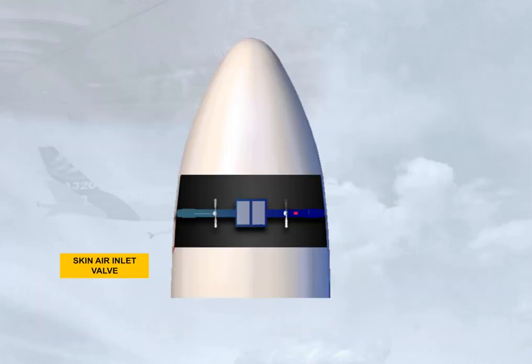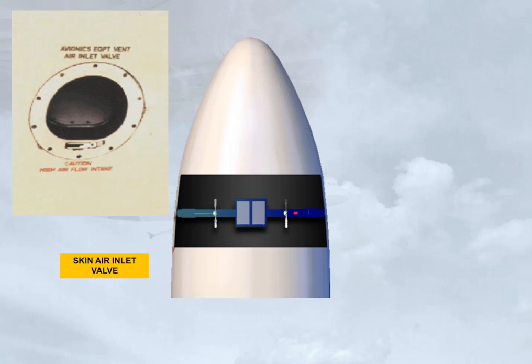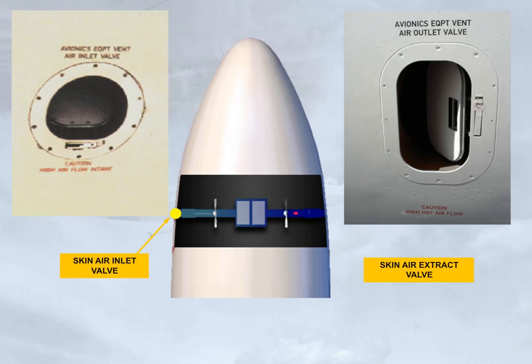The skin air inlet valve is located on the left-hand side of the aircraft, and the skin air extract valve with its small flap on the right-hand side. Both valves are inspected during the pre-flight walk-around for damage or obstruction.